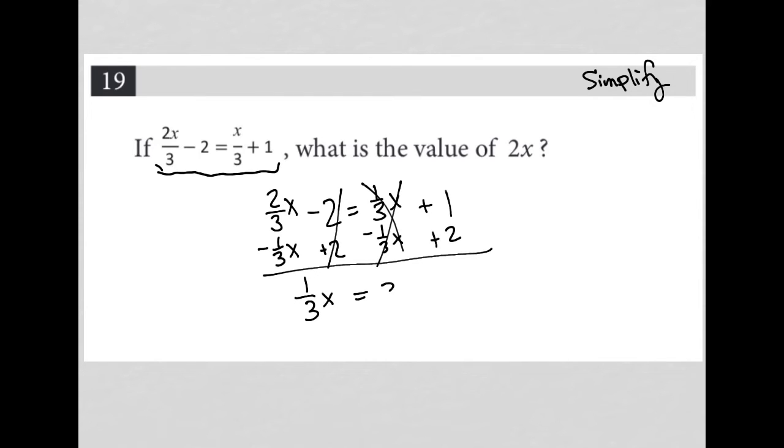And one plus two is equal to three. So to solve and get, or to isolate x I should say, I'm going to multiply both sides by three over one, which is the same as multiplying by three. I'm multiplying by three over one in order to cross cancel out the one third that gets my x alone, and that leaves me with three times three, which is nine.